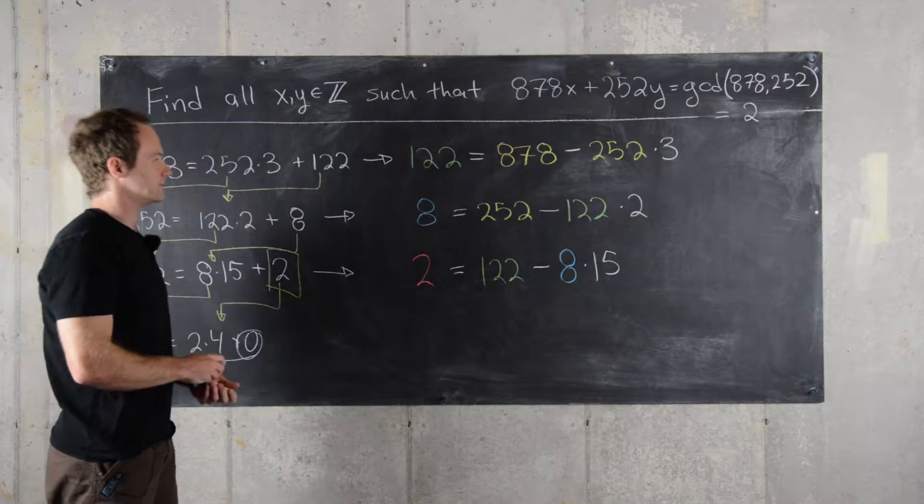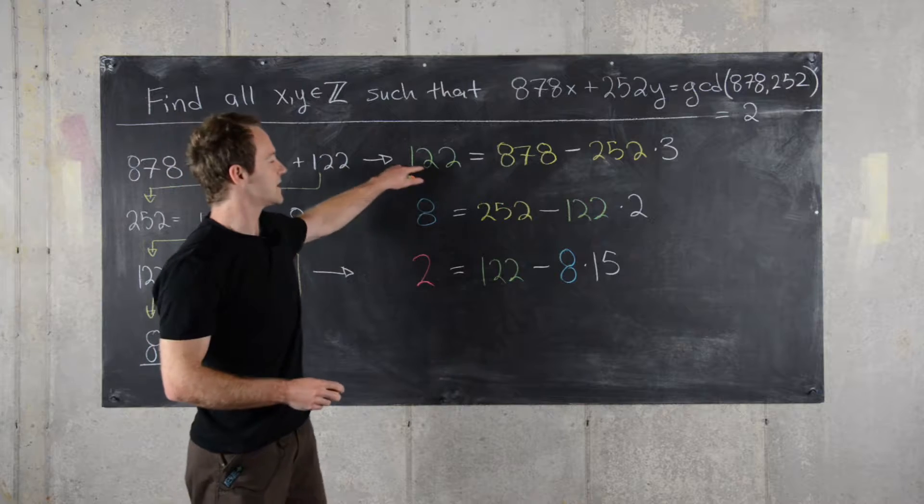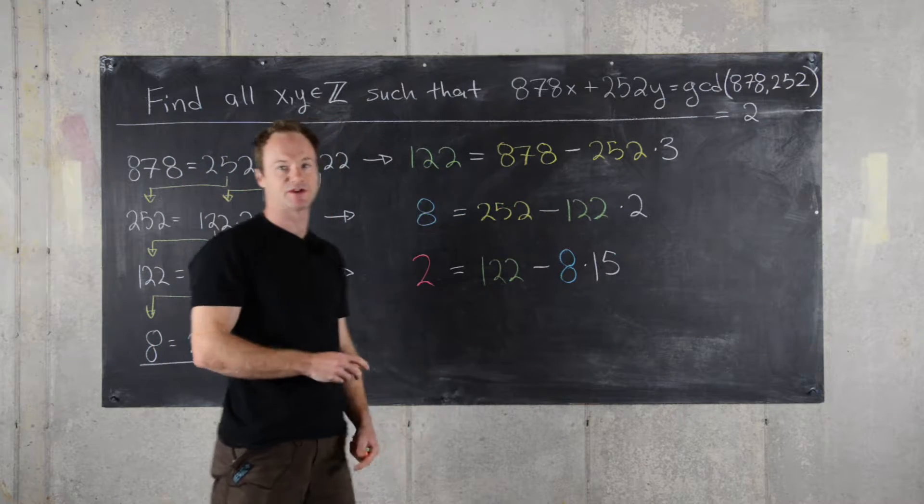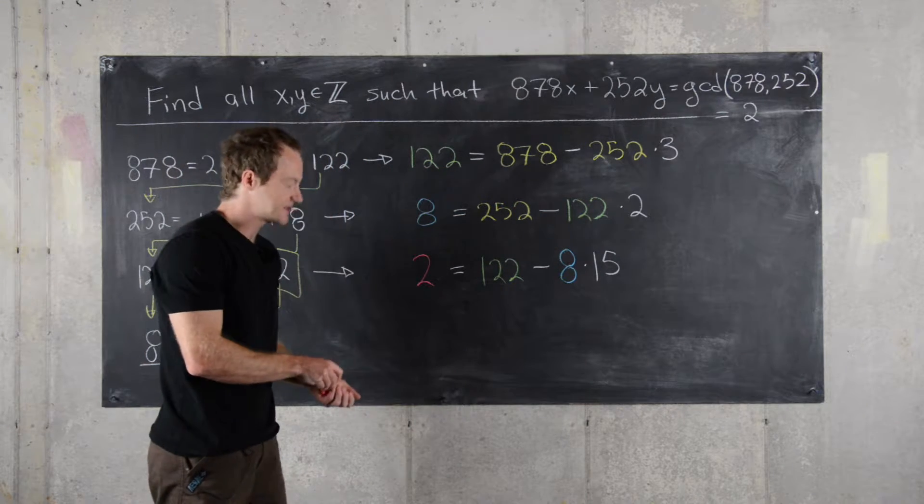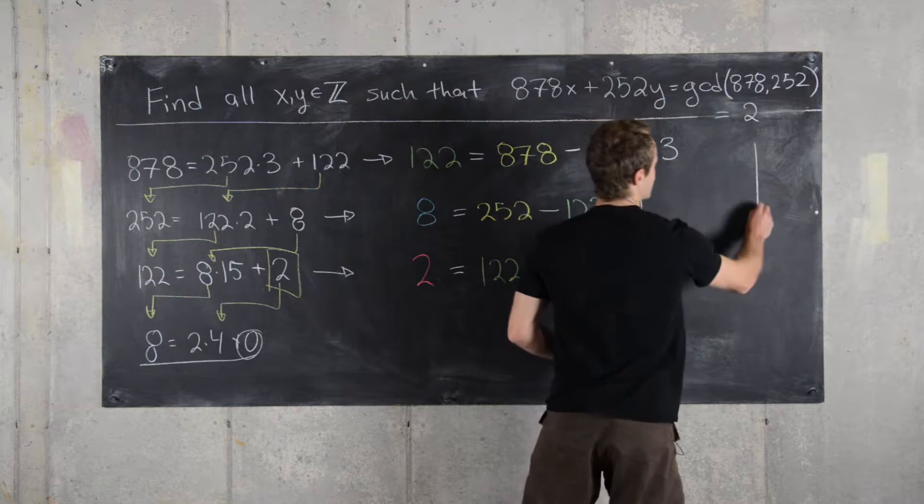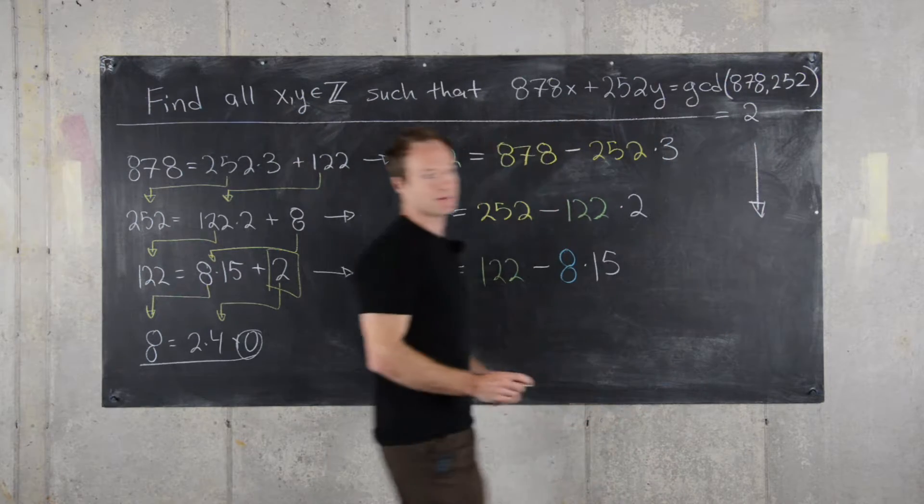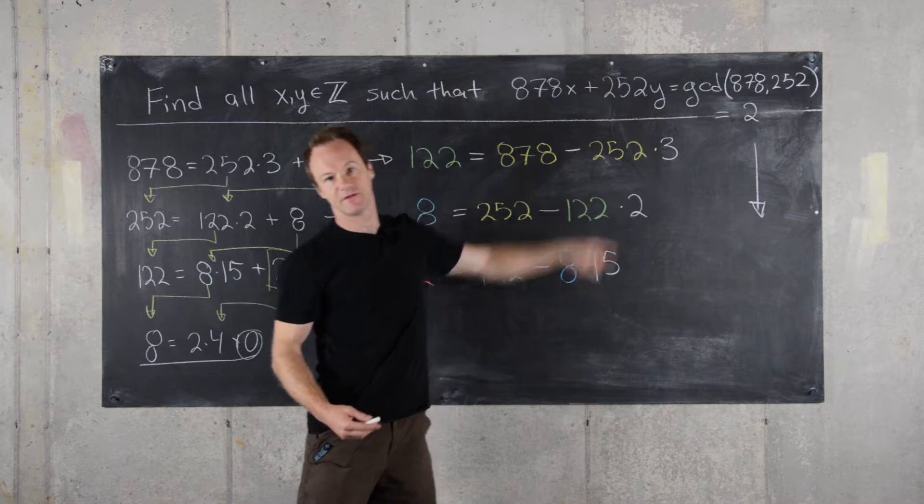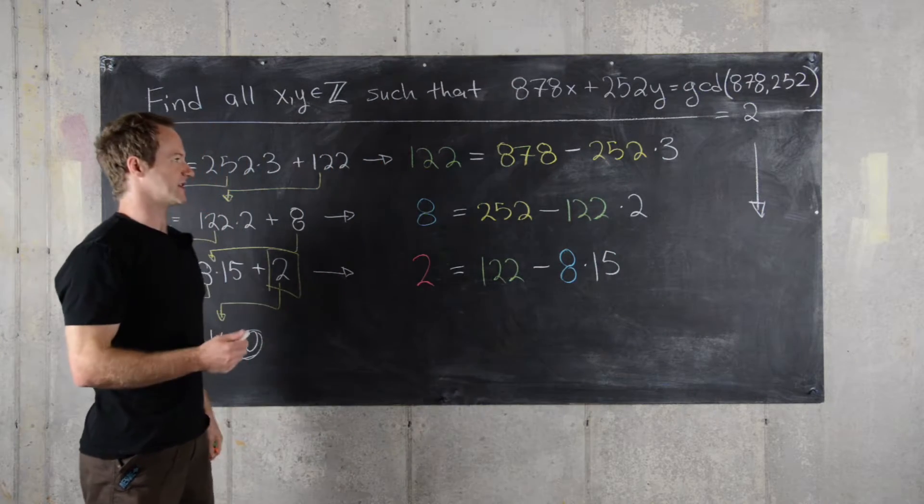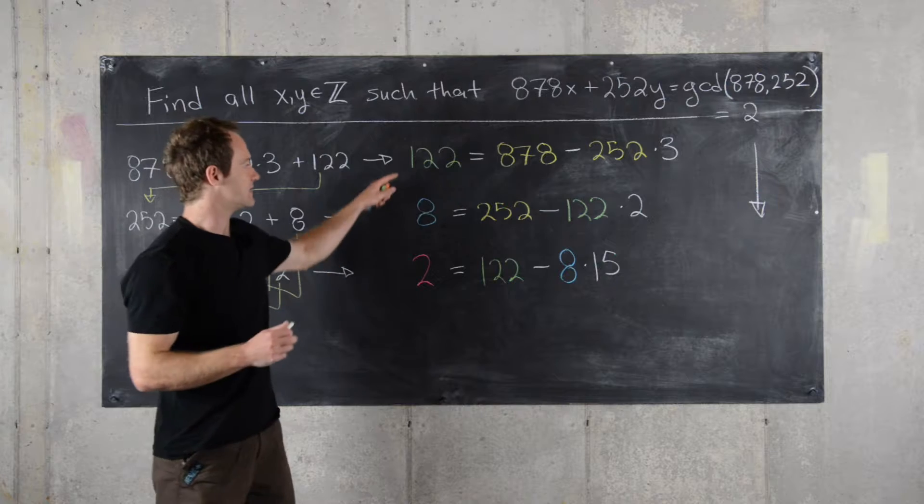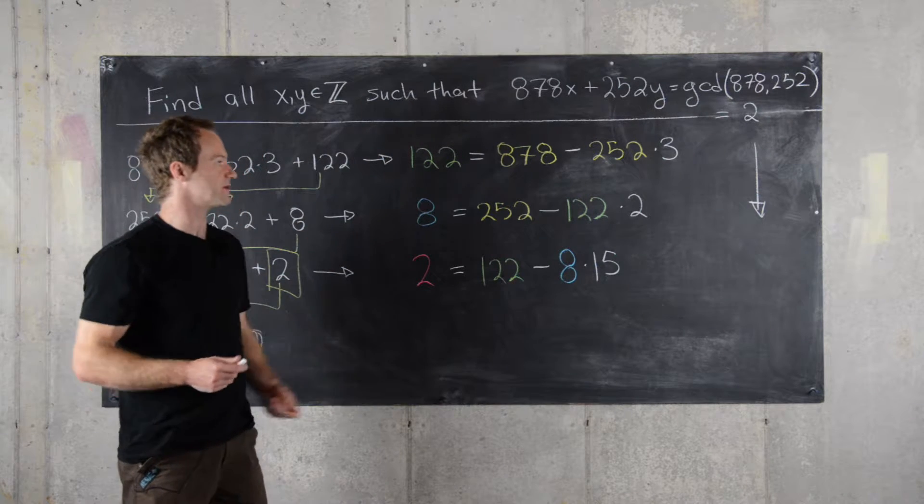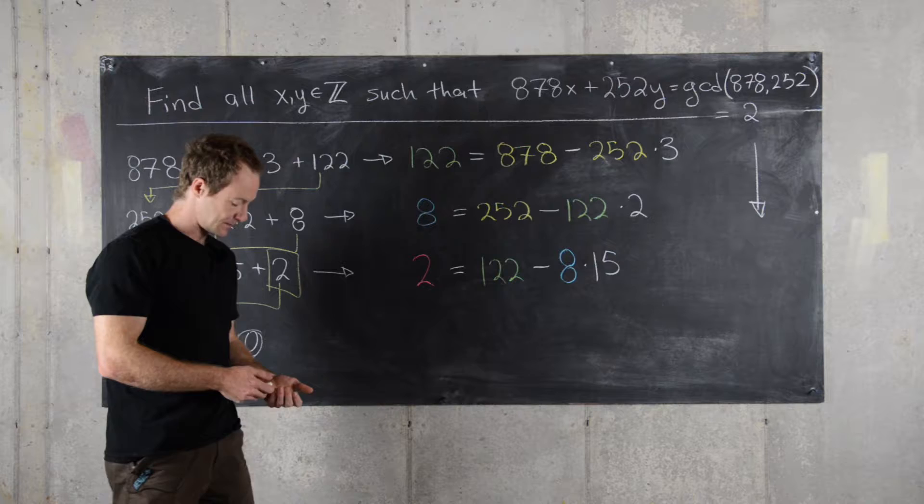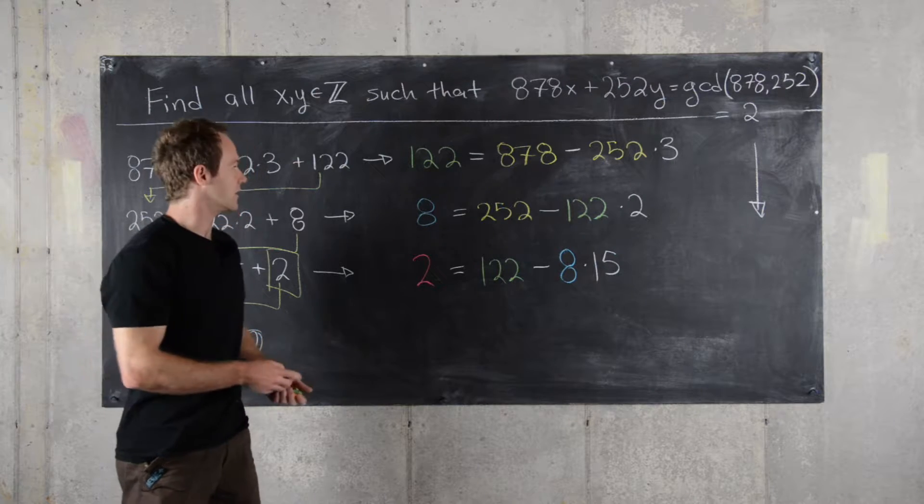So now we're all set. I've color coded to see how the substitutions are going to go. We're going to substitute from this top equation down to the bottom equation, keeping 878 and 252 as variables, combining them as like terms, until we have 2 in terms of 878 and 252.